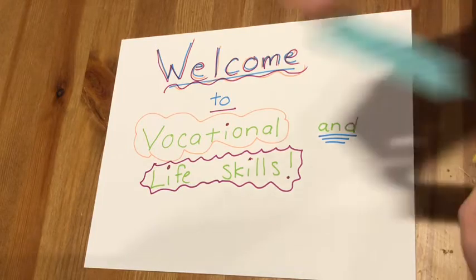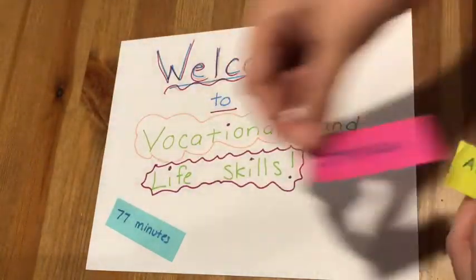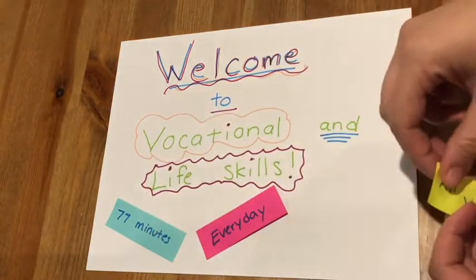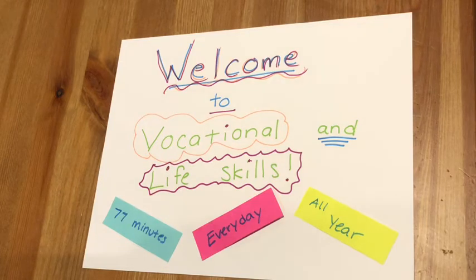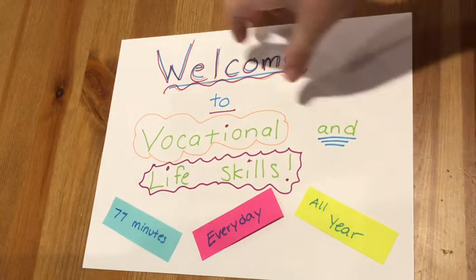Vocational and Life Skills meets for 77 minutes every day all year. This is a class that you'll have every single day on a rotating schedule depending on what block it falls on.